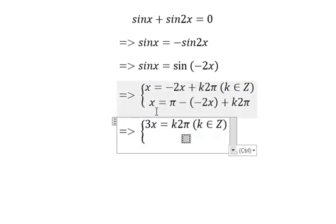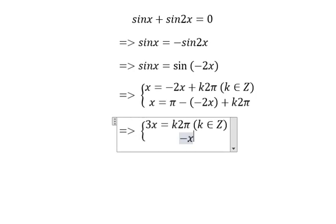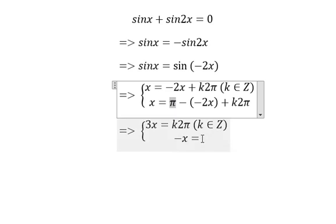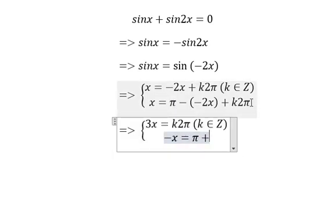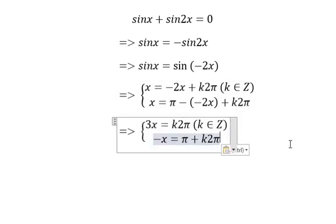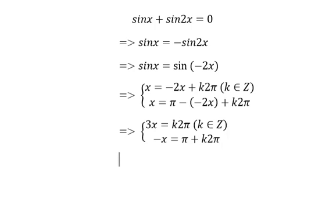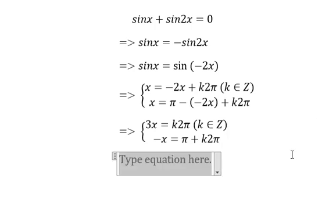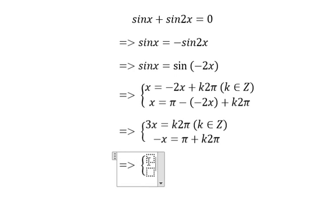For this one, we put 2x on the left, so we get negative x. Now we need to find the final answer: x equals k times 2π divided by 3.